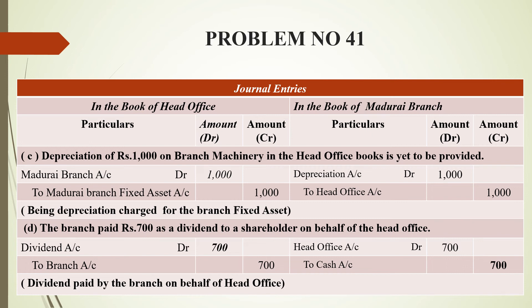The last entry of this problem: the branch paid rupees 700 as dividend to a shareholder on behalf of the head office. The payment was made by the branch on behalf of the head office. The entry is: Dividend Account debit to Branch Account, for rupees 700. In the head office books, the cash account is credited as cash has gone out.